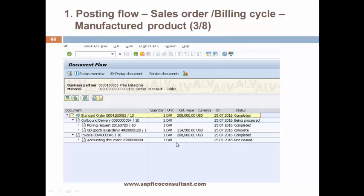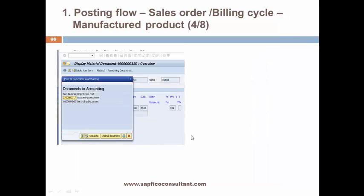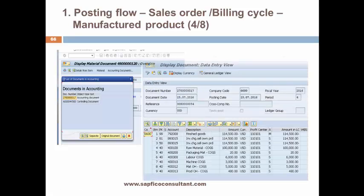Here is the document flow for the sales order. We have the sales order, then the goods issue, and finally the billing document for which an accounting document is generated. The goods issue is done by movement type 601, and an accounting document along with a controlling document — which is the account-based PA document — is created.